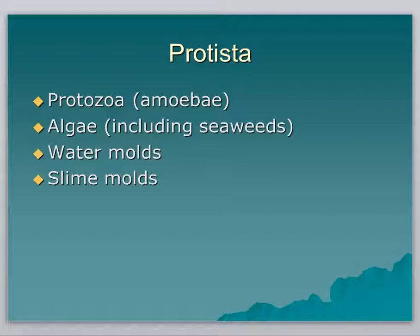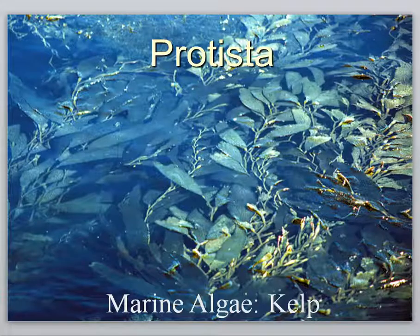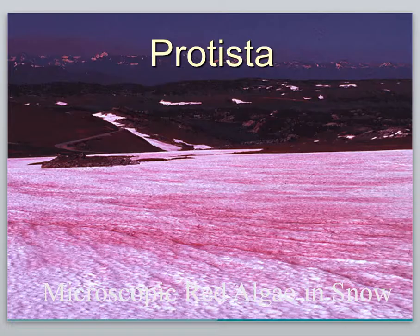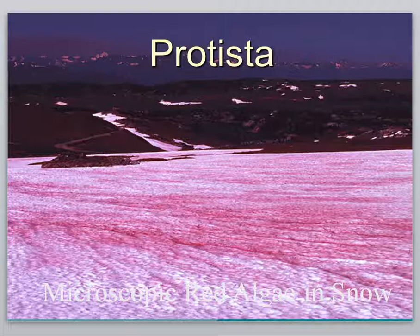Here are some examples of things from the protist kingdom — just a few examples from each kingdom as we talk about general principles of taxonomy. Algae, seaweeds, slime molds, and protozoa are some examples of protist kingdom organisms. We all know about kelp that grows offshore here in Santa Barbara. There's also microscopic red algae that lives in snow — just a strange but interesting example.